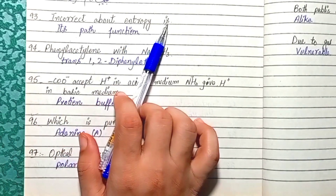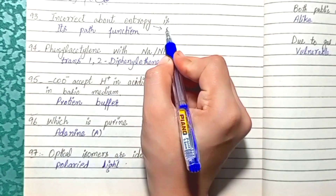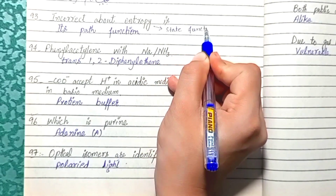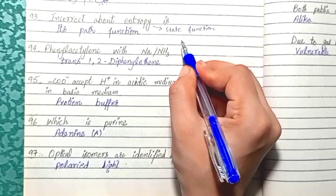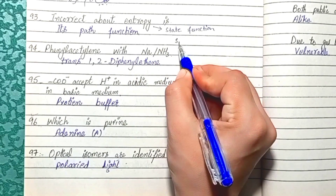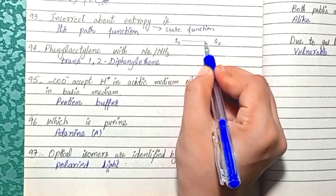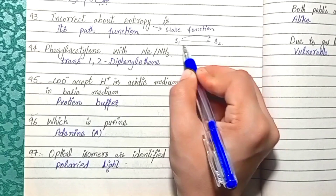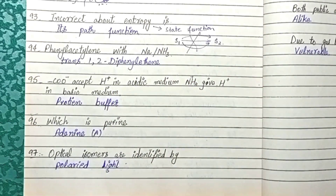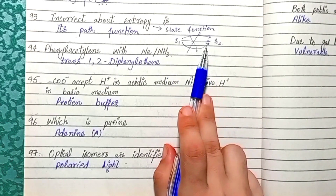Question 93: What is incorrect about entropy — the answer is that entropy is a path function. Entropy is NOT a path function; it is a state function. It depends only on the initial and final states. Regardless of the path taken from initial to final state, the change in entropy is the same.